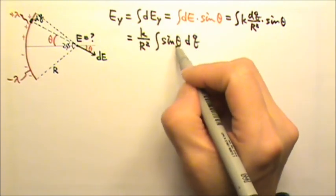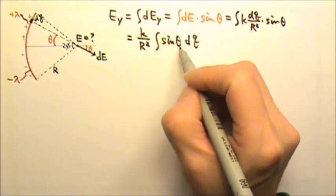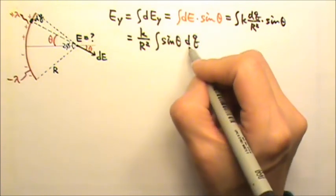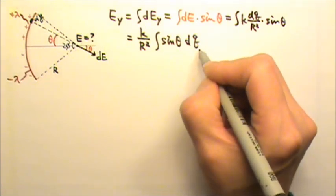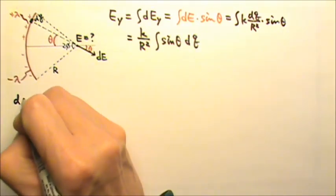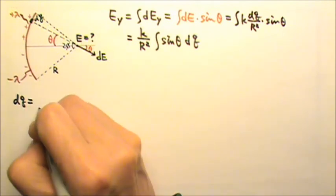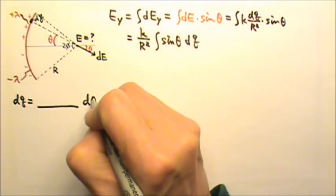Now this θ is a variable. So the sin θ is a function of θ. That means that we would like this to be dθ. So we're trying to write the dQ into something dθ.